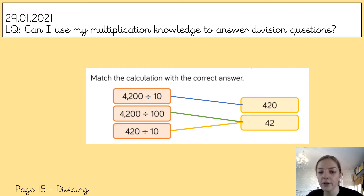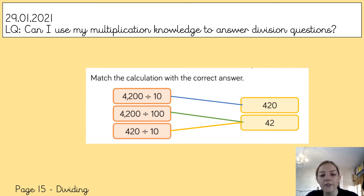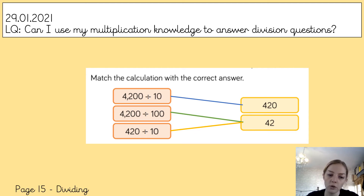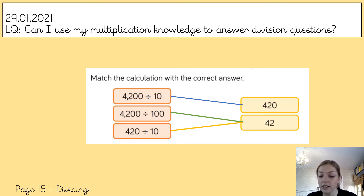If you matched them up like this, then well done — you're doing a great job and you must know lots about division already. If you weren't quite sure, that's fine because we're going to cover it in today's lesson. So: 4,200 divided by 10 is 420; 4,200 divided by 100 is 42; and 420 divided by 10 is also 42.